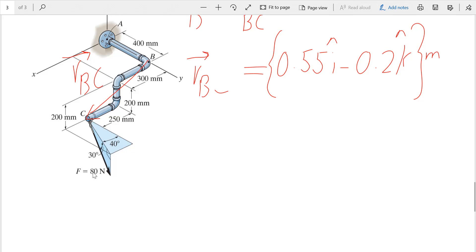So if I write 80 cosine 30, then I have my force in the XY plane. If I want to write it on the XY plane - call this Y and X - this projection would be 80 cosine 30.